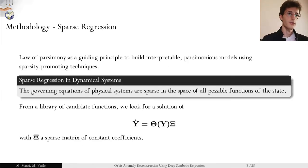The first ingredient is the sparse regression technique starting from the law of parsimony, also known as Occam's Razor, which is used as a principle to build interpretable parsimonious models. The idea is to use sparsity-promoting techniques. More formally, the assumption is that the governing equations of the physical systems of interest are sparse in the space of all possible functions of the state. This is described in the equation below, stating that the coefficient matrix is sparse. Theta is the matrix of the functions, the library of functions describing the system.